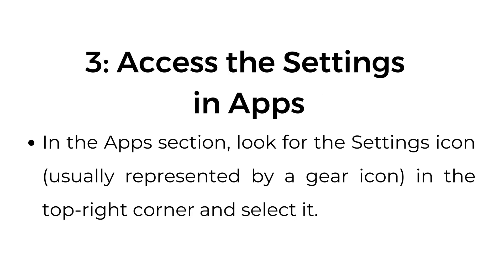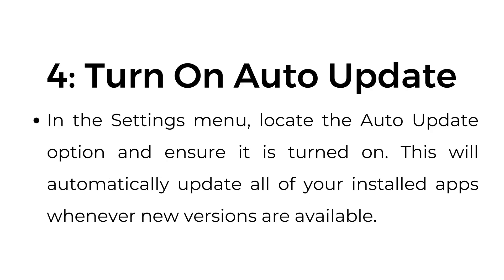Step 3: Access the Settings in the Apps section. Look for the Settings icon, usually represented by a gear icon in the top right corner, and select it. Step 4: Turn on Auto Update — in the Settings menu, locate the Auto Update option and ensure it is turned on.